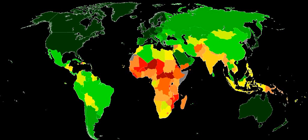The index was developed in 1990 by Pakistani economist Mahbub ul-Haq and Indian economist Amartya Sen. The UN report covers 187 member states of the United Nations out of 193, along with Hong Kong and Palestine. Seven UN member states are not included because of lack of data. The average HDI of regions of the world and groups of countries are also included for comparison.